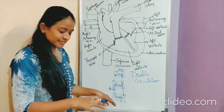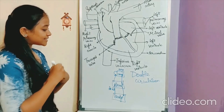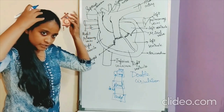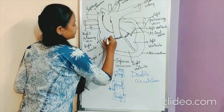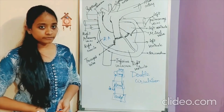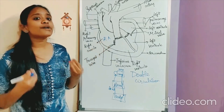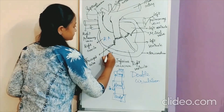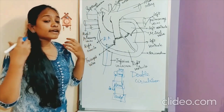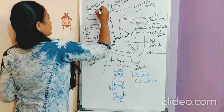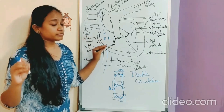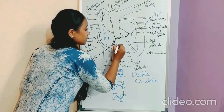Let us look at this process in detail. The deoxygenated blood from all over the body — from head to toe — is brought to the right auricle. The deoxygenated blood from the legs and abdomen is brought to the right auricle through a vein called the inferior vena cava, and the deoxygenated blood from the upper part of the body — the head, neck and arms — is brought to the right auricle through the superior vena cava. Once the blood is collected in the right auricle, it pumps this deoxygenated blood into the right ventricle.